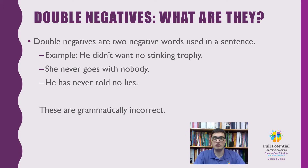For example, in the third sentence, we don't know if he — the subject — has ever told a lie or not, because 'never told no lies' seems to suggest he has told a lie, but we don't know that. Double negatives might work in math, but they don't work in English grammar, so you'll have to correct them if you want them to be proper.